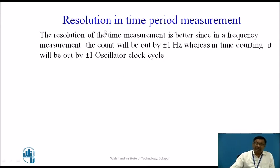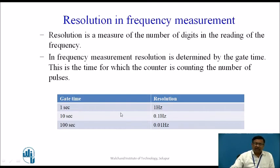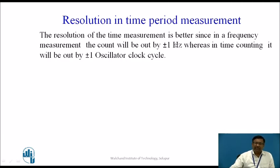Now, let us see resolution in time period measurement. The resolution of the time period measurement is better than frequency measurement. In frequency measurement, the count will be out by plus or minus 1 hertz — for a gate time of 1 second, resolution will be 1 hertz. Whereas in time period counting, it will be out by plus or minus 1 oscillator clock period, which is a higher frequency value. That is why the resolution using time period measurement will be better than frequency measurement.